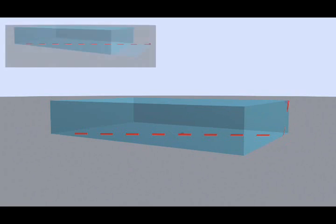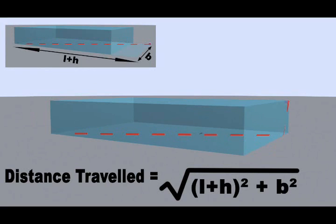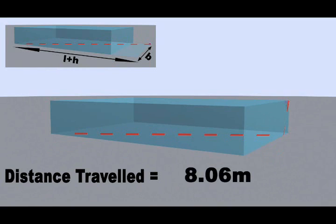The distance would now be square root of length plus height whole squared plus breadth squared. That is equal to 8.06 meters.